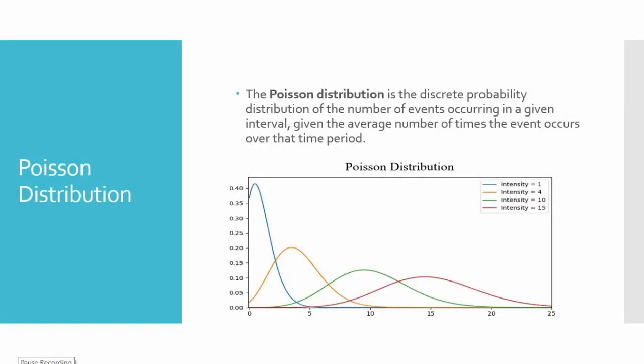Hello, welcome back. In this video, we will talk about Poisson distribution. The Poisson distribution is the discrete probability distribution of number of events occurring in a given interval, given the average number of times the event occurs over the time period.